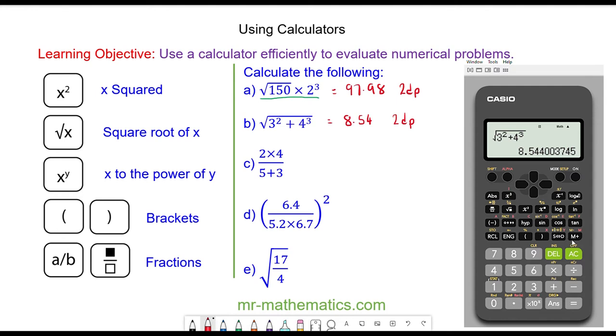For question c we have a fraction so we press the fraction button. We have 2 multiplied by 4 on the numerator, we press downwards to go to the denominator, and 5 add 3, and the answer is 1.